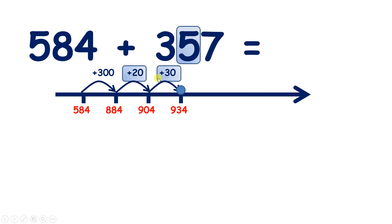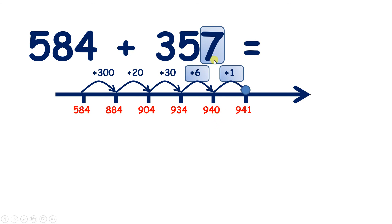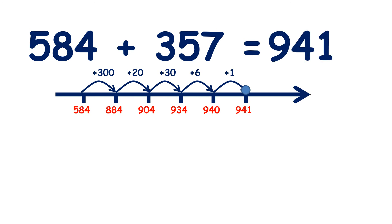So we added twenty, then added thirty, so we added fifty altogether. Now we just need to add our seven units. If we add six, that takes us to nine hundred and forty, and one more to nine hundred and forty-one. So we added six to get to our next ten, then added one more, so added seven altogether. Five hundred and eighty-four plus three hundred and fifty-seven equals nine hundred and forty-one.